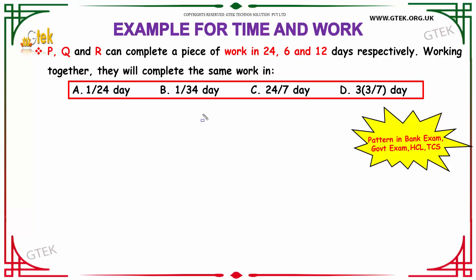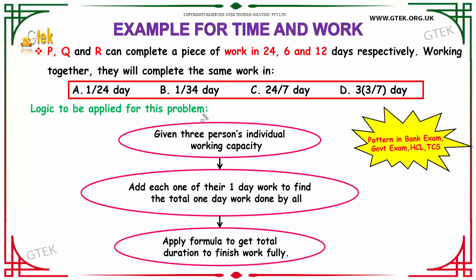Let us see the logic behind solving this question. The logic is, we are given with 3 persons individual working capacity. Add each one of their one day work to find the total one day work done by all. And then you have to apply the formula to get total duration to finish work fully.